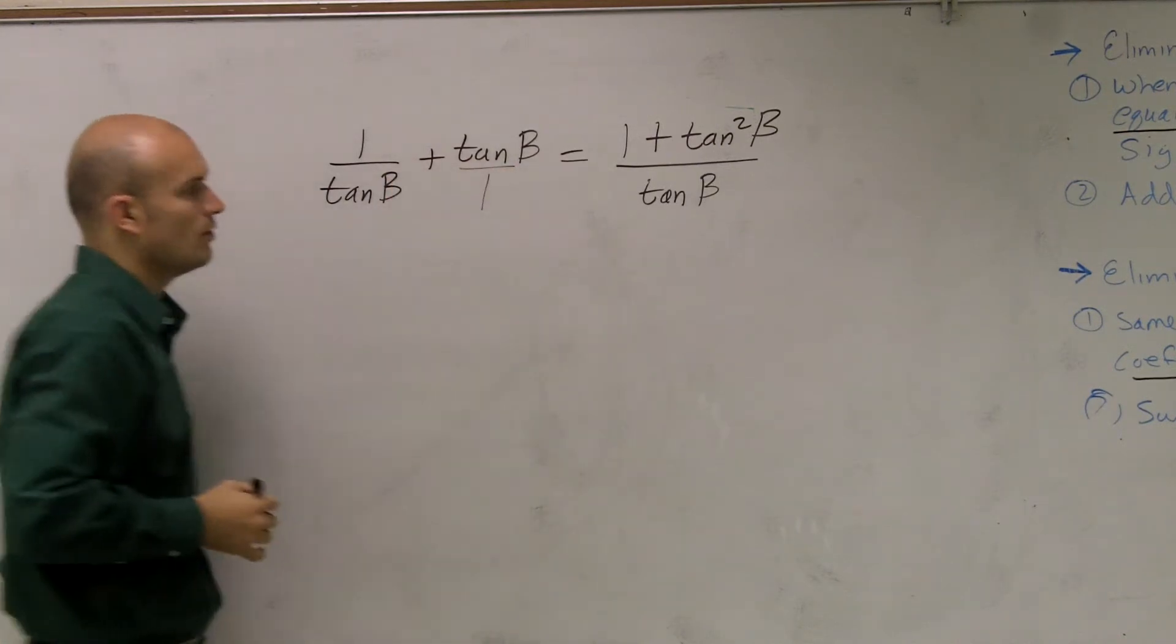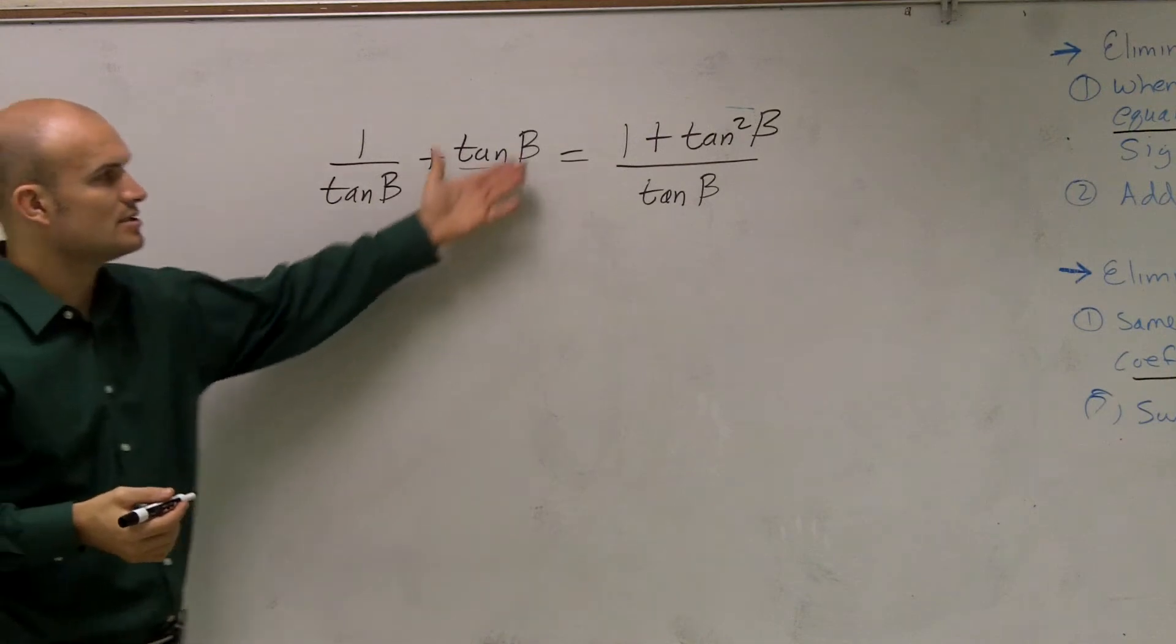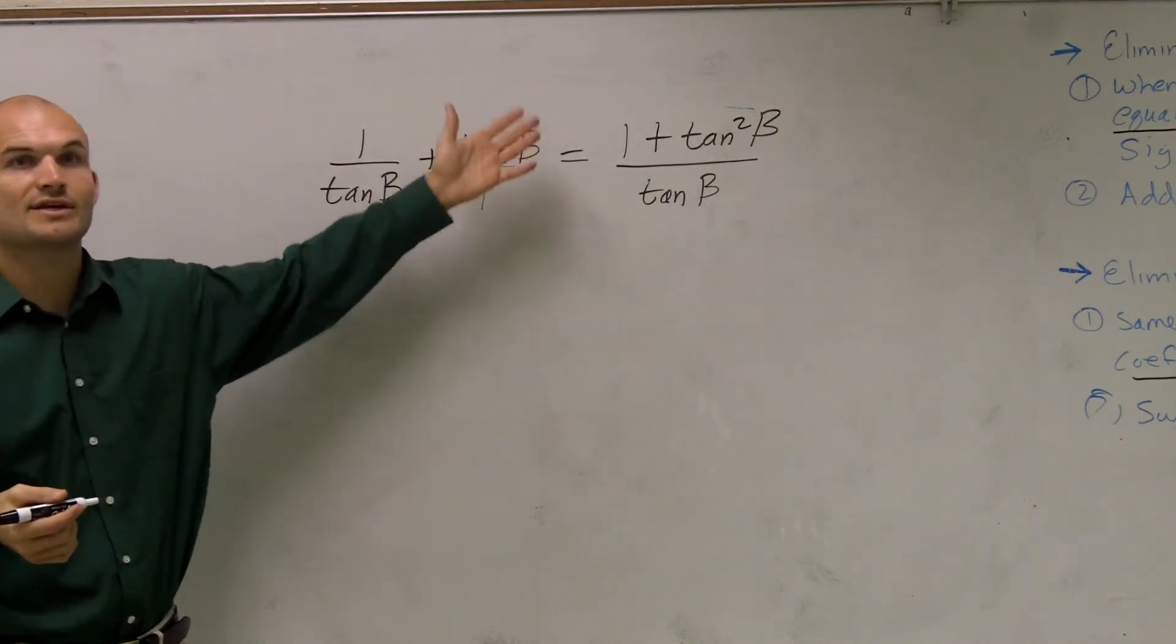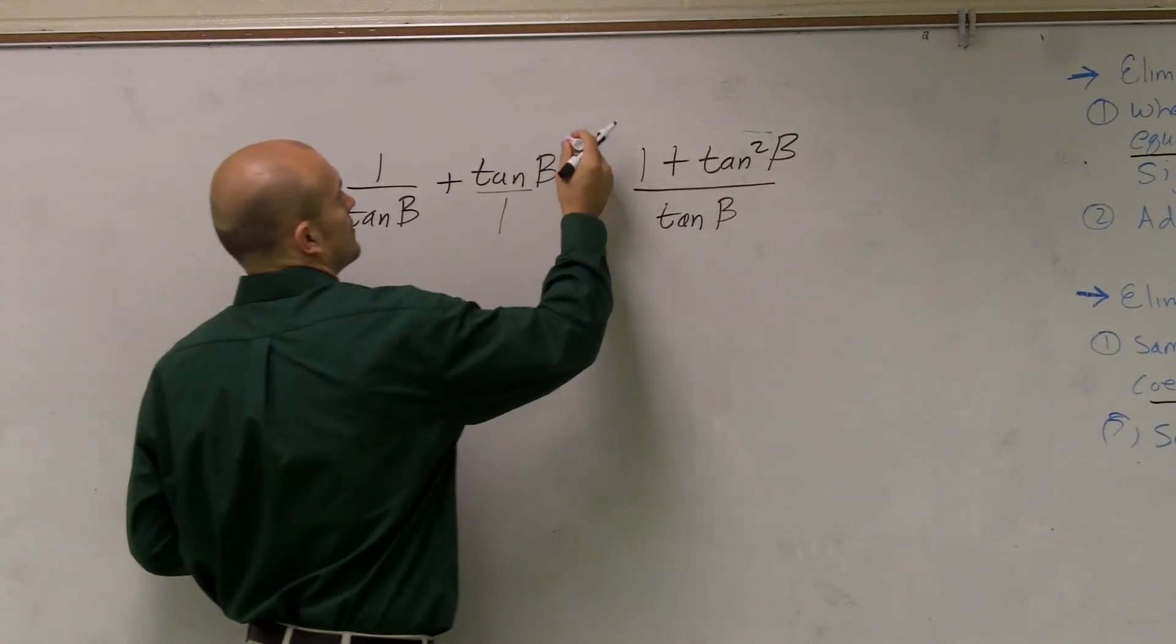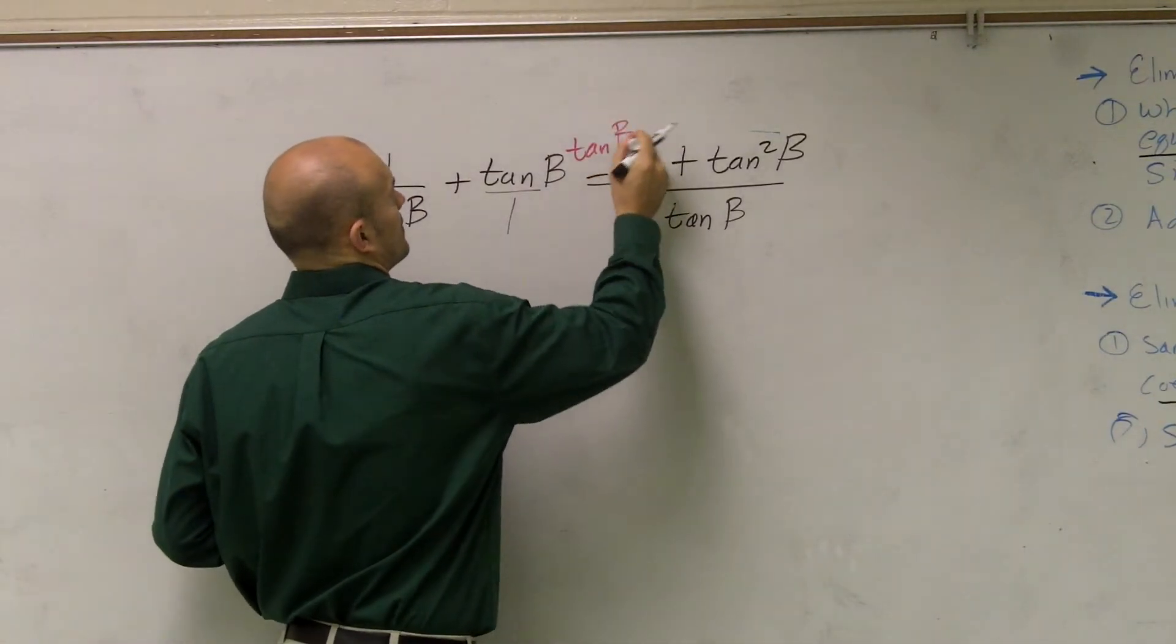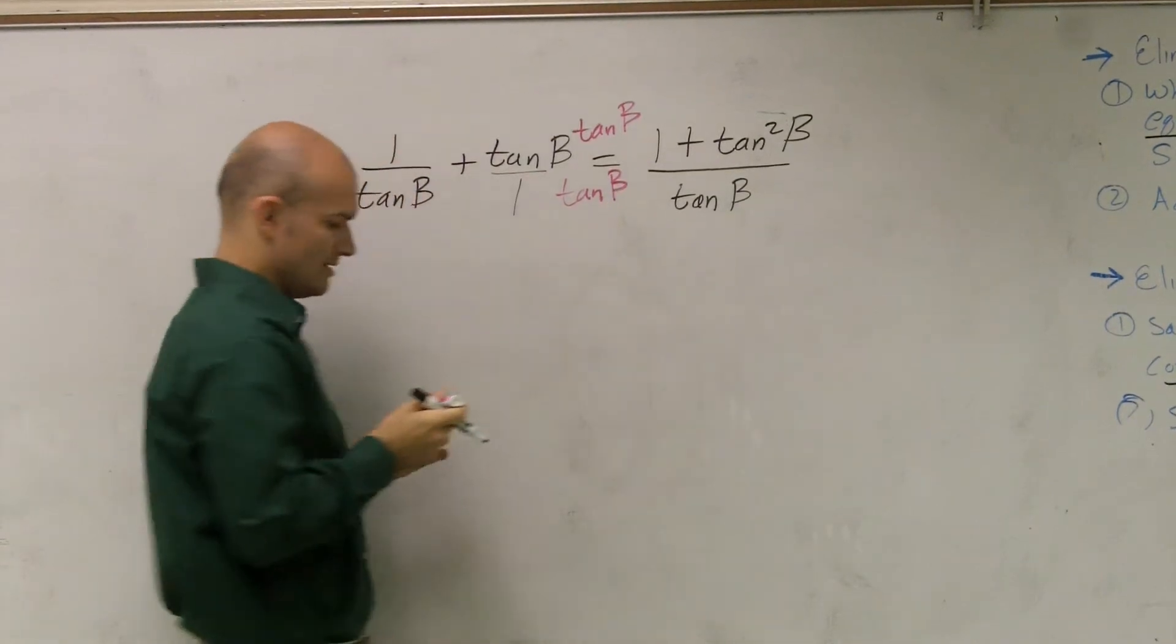Well, again, if I put this over a 1, to add these together, you're going to have to get them with the same denominator, which would be tangent of B over tangent of B.